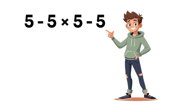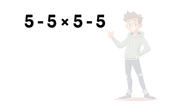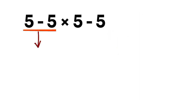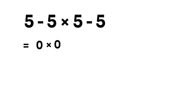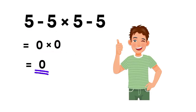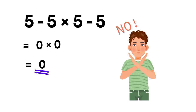Let's look at this expression: 5 minus 5 multiplied by 5 minus 5. 5 minus 5 is 0, and again 5 minus 5 is 0, so 0 multiplied by 0 equals 0. And at first, that sounds right — but it is actually not correct.